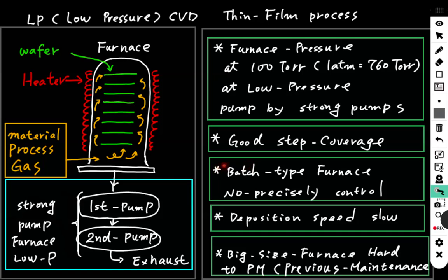The batch type furnace processes many wafers at once, but it's not precisely controlled, because the gas inside the furnace is not evenly distributed. The gas near the heater may be at a lower temperature while gas elsewhere may be at higher temperature, so it's hard to do precise control.